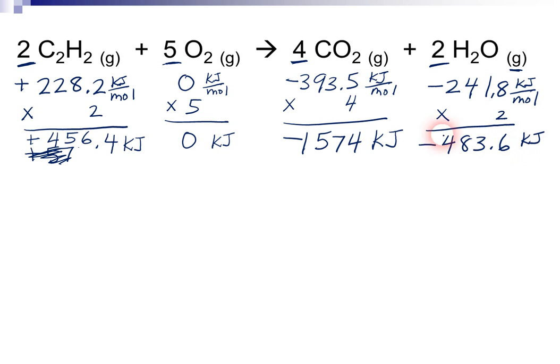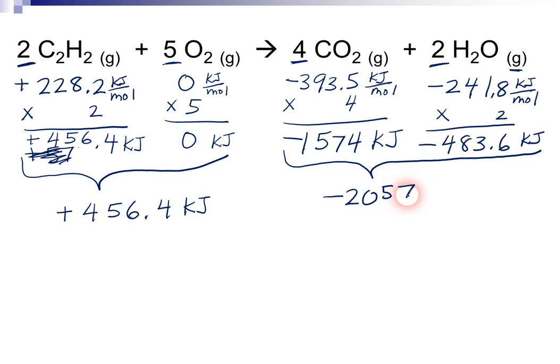Now, what do we do at this point? Well, we add up the reactants, and we add up the products. And we're going to take products minus reactants. Right side minus left side. So, reactants would be, that's pretty easy to add up. It's 456.4 kilojoules. On the right side over here, we might need a calculator for that. The answer I'm getting is negative 2,057.6 kilojoules.